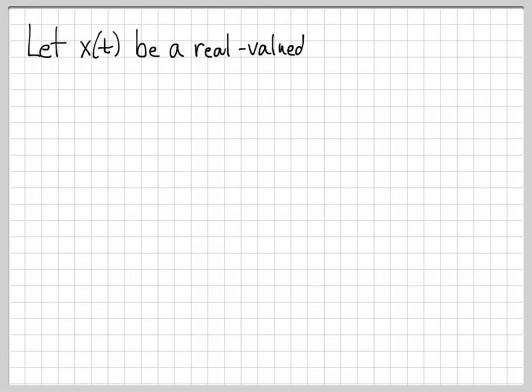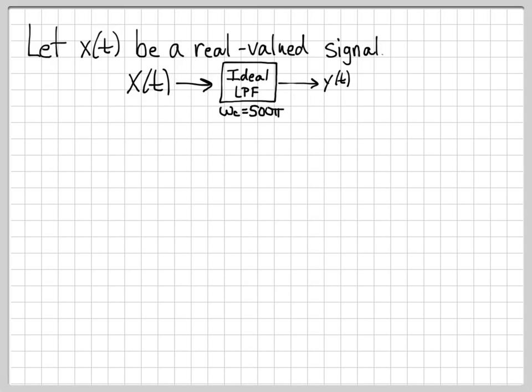So in this problem, we're going to consider the signal x of t, and it's a real-valued signal. We're going to take x of t and pass it through an ideal low-pass filter whose cutoff frequency is omega c equals 500 pi radians.